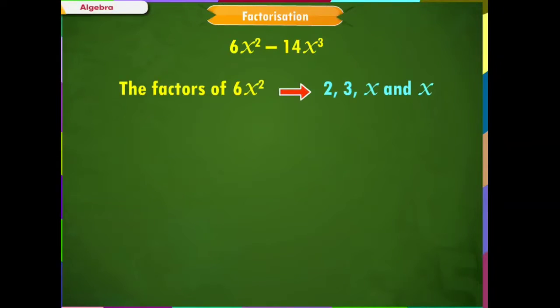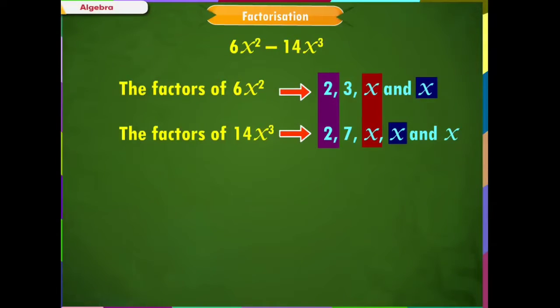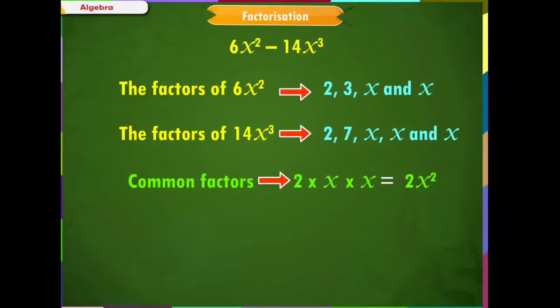The factors of 6x² are 2, 3, x and x. The factors of 14x³ are 2, 7, x, x and x. We can see here that the numerical value 2 is common and the variable x and x are common. Therefore, the common factors of both the terms are 2 × x × x, which is 2x².